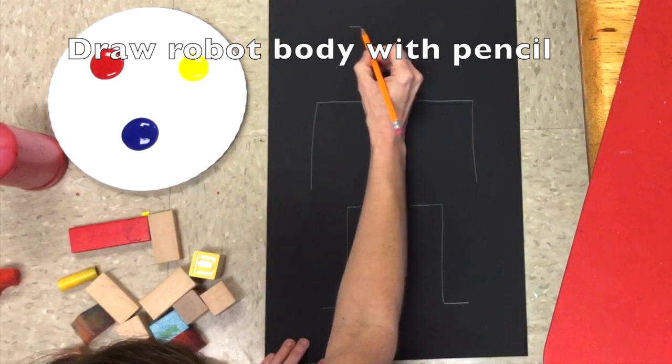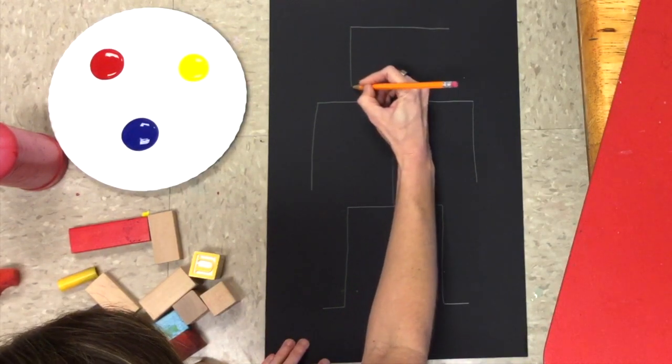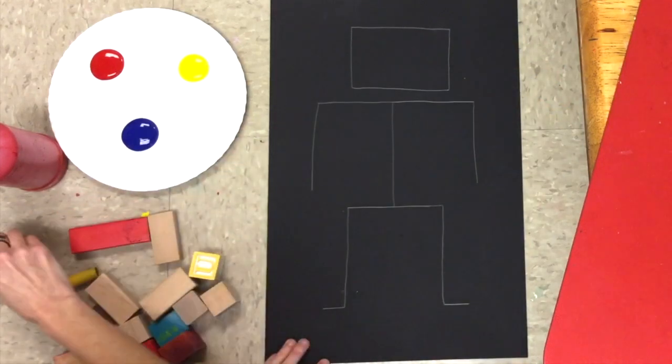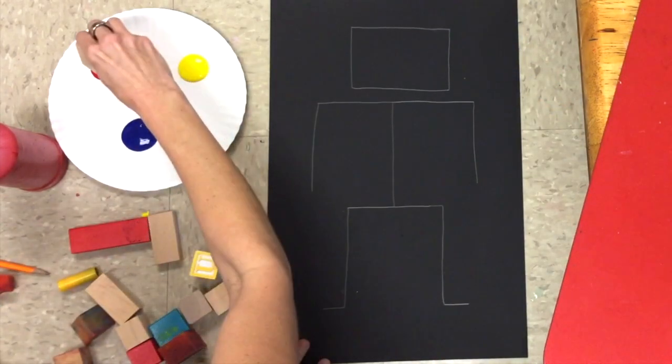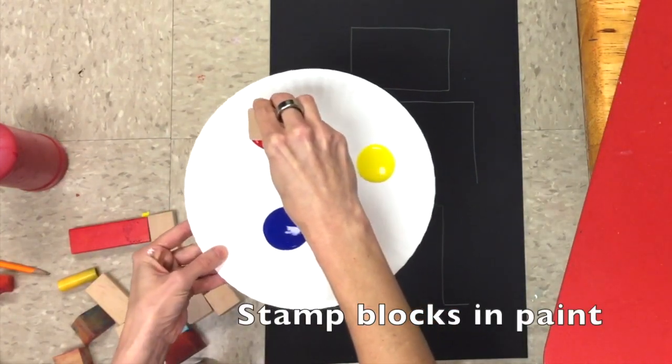I'm going to draw a big square for the head. Nice job. See how I used the whole space on my paper to fill up my robot body?